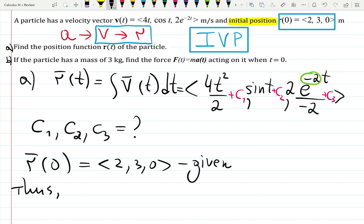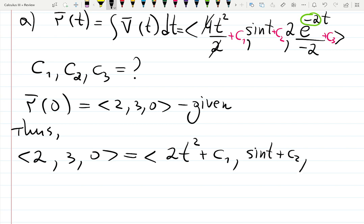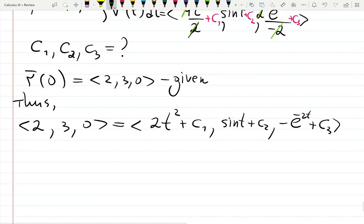So r(0) is supposed to be <2, 3, 0>. This is given. Thus, 2, I will be writing like this: <2, 3, 0> should be equal to... Let's simplify: 2t² + C₁, sine t + C₂, minus e^(-2t) + C₃. Each component should be set equal to each other. 2 equals 2t² plus C₁. But remember, this way we're not going to find C's. We actually need to plug the initial value, whatever it is.